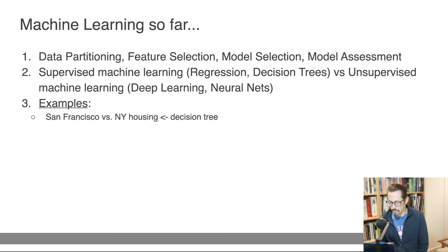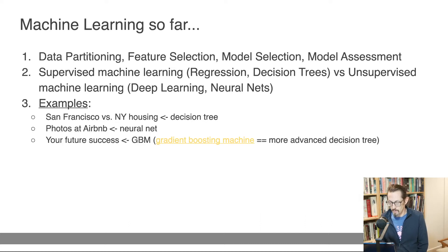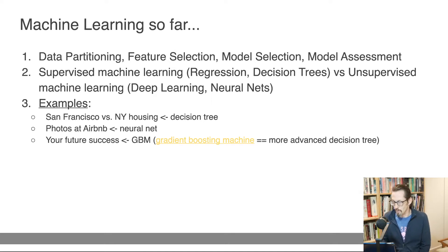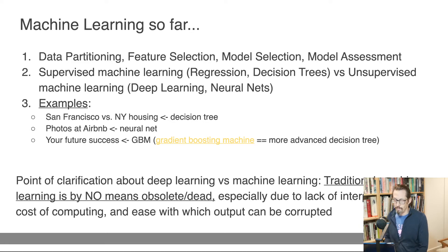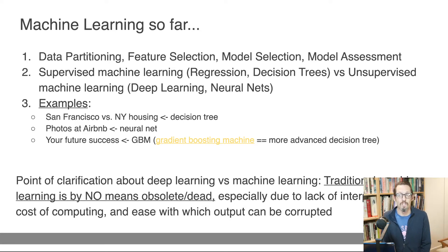We've already talked about some examples like the decision tree learning of San Francisco versus New York City, and we're going to do a couple more examples. We're going to talk about Airbnb photos and looking at future success using a more advanced decision tree. Just because something is a buzzword and every Silicon Valley startup is doing something with deep learning doesn't mean other machine learning algorithms are dead or obsolete.